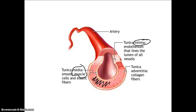The outer layer of the blood vessel is called the adventitia. You also have the lumen of a blood vessel, which is where blood flows through. So the intima, being the innermost layer, will be in direct contact with the lumen.